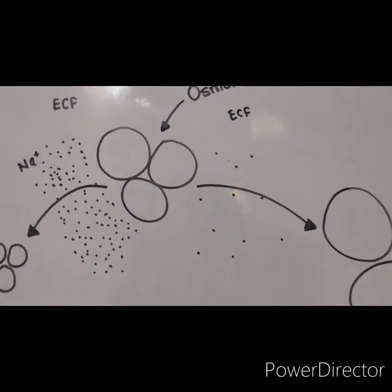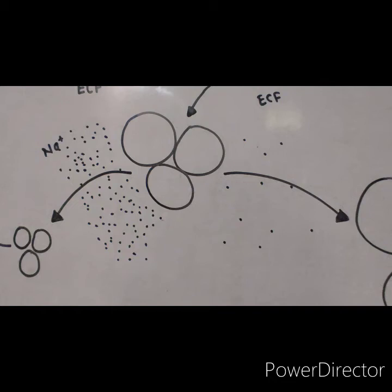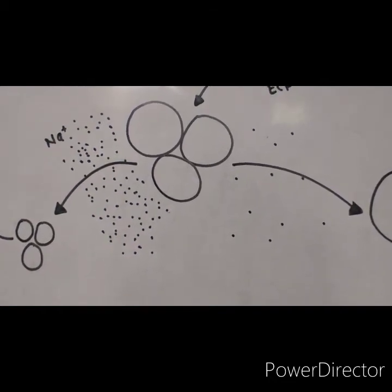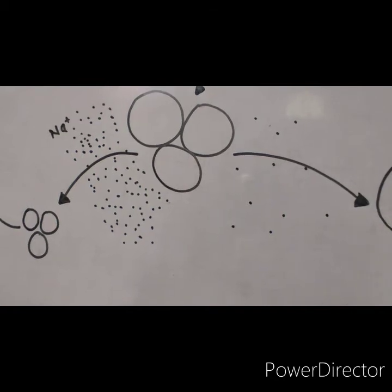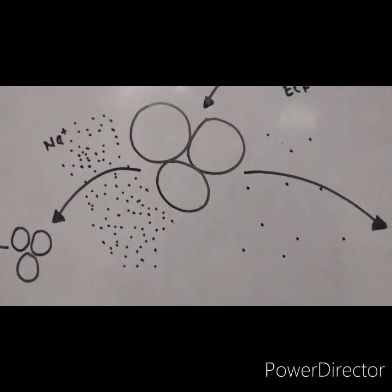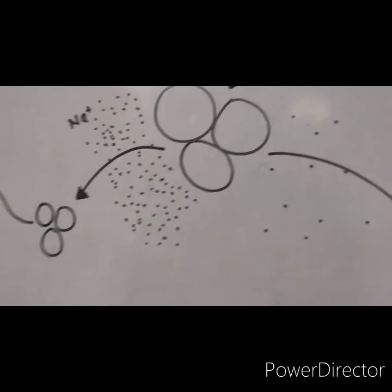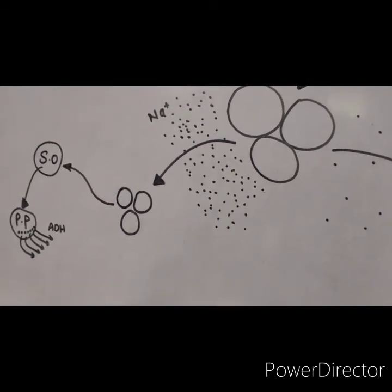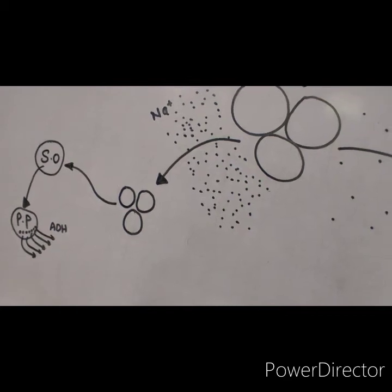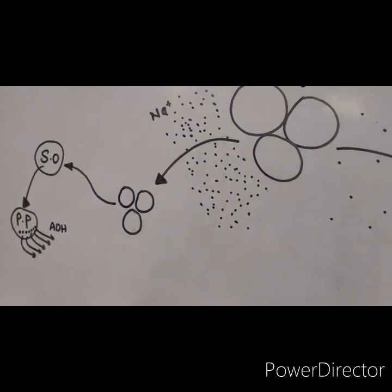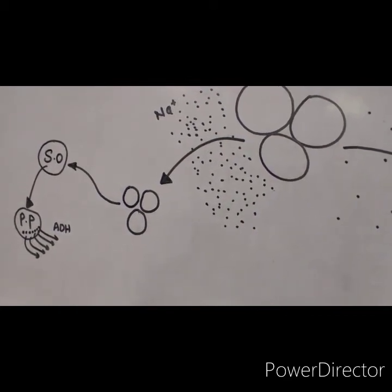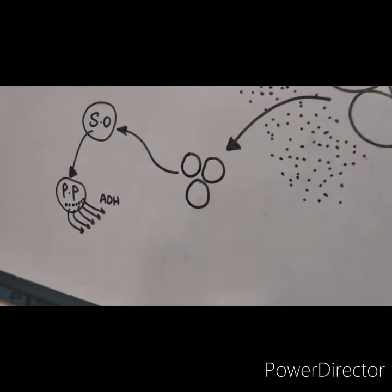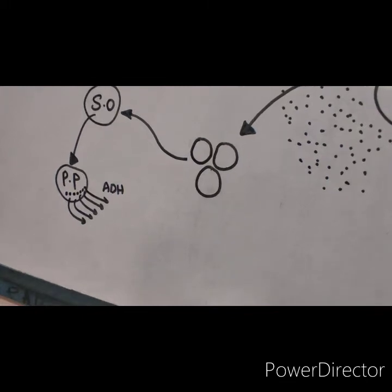These are the osmoreceptors with extracellular fluid outside. When plasma sodium level is high - that is, when plasma osmolarity is high - water will come out of the osmoreceptor cell by osmosis, causing shrinkage of the osmoreceptors. Because of osmoreceptor shrinkage, ADH secretion signals increase from supraoptic nucleus to the posterior pituitary, and antidiuretic hormone is secreted in larger quantities.